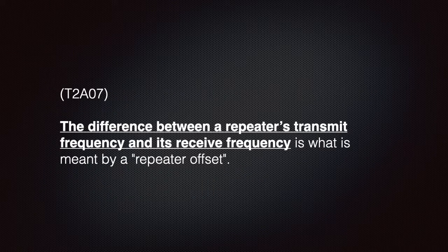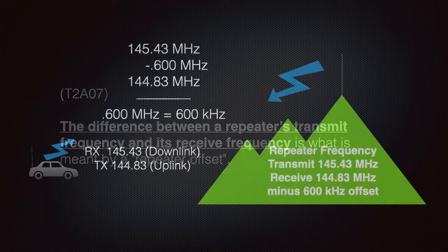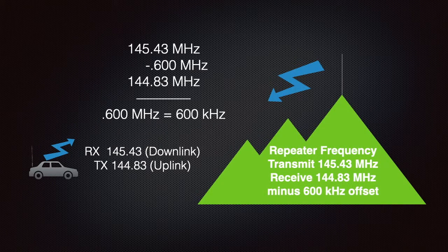We need to understand that the difference between a repeater's transmitted frequency and its receive frequency is what is meant by a repeater offset. This is called duplex operation because it uses two frequencies to communicate.